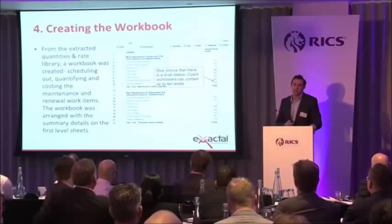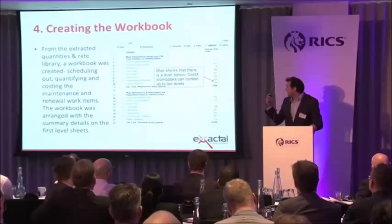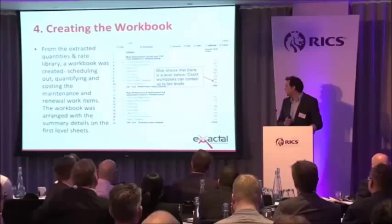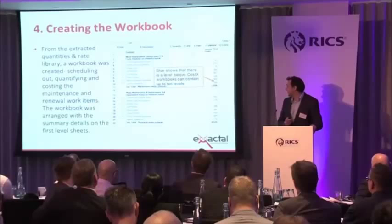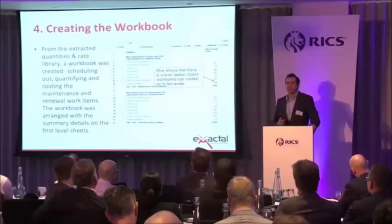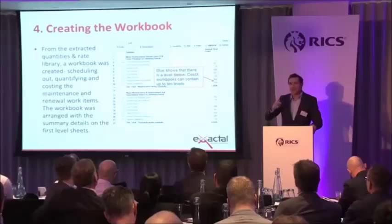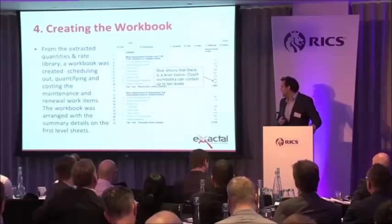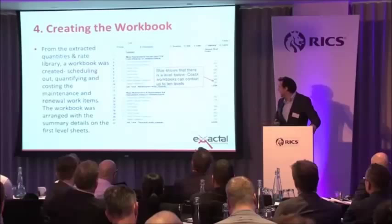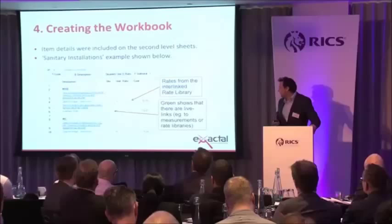What we did with the workbook is we based it on the NRM3 structure. So you'll see at the top we've got minor maintenance items, and at the bottom half of the sheet there are major replacement and minor works items. The elemental breakdown structure is the BCIS elemental structure and NRM3 structure, with applicable elements from 2.6 down through 5.1 standard installations. Costex works on a hierarchical structure — that will be the summary page, but drilling down you get to a more detailed page. This is an example of the sanitary installations calculations.